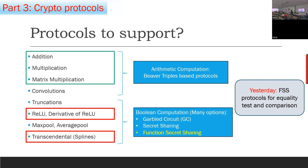For Boolean computation there are many options: things like garbled circuit and secret sharing. The last one I spent time on was function secret sharing, which had the nice property that the protocol became compute-bound. Yesterday we saw FSS protocols for equality test and comparison — I perhaps rushed through the comparison protocol, so I'll quickly recap that. Today we will go into how you compute ReLU, transcendental functions, and splines, and I will touch upon some very interesting properties of FSS-based protocols.